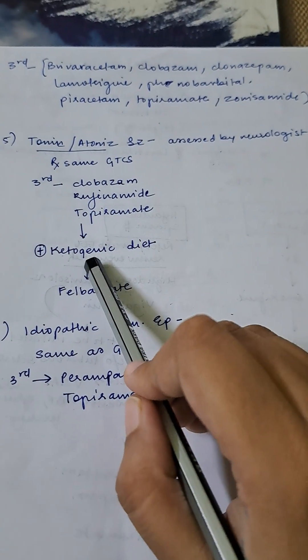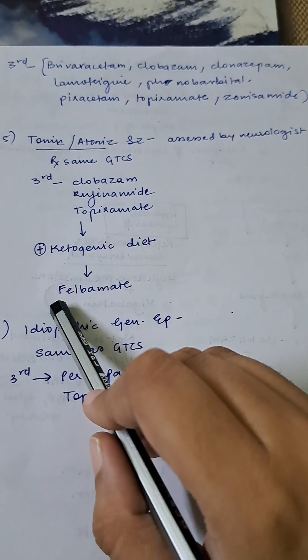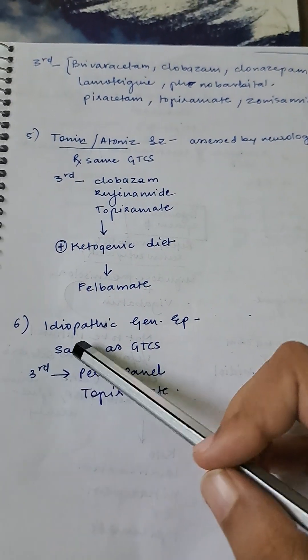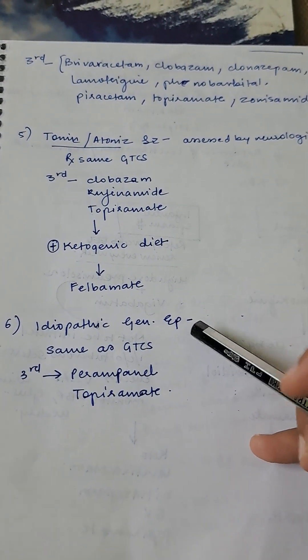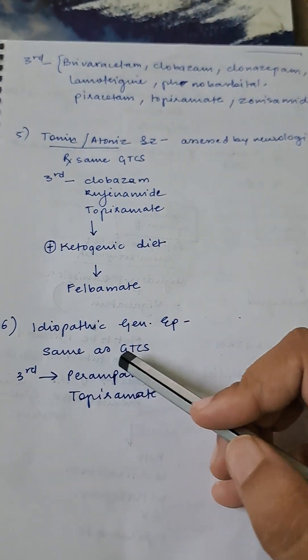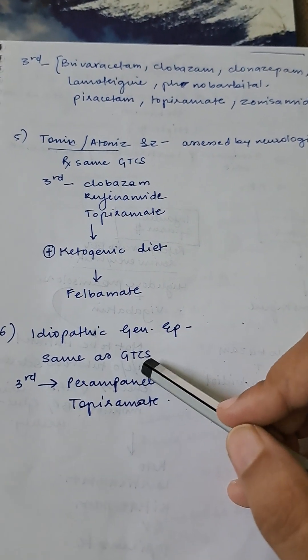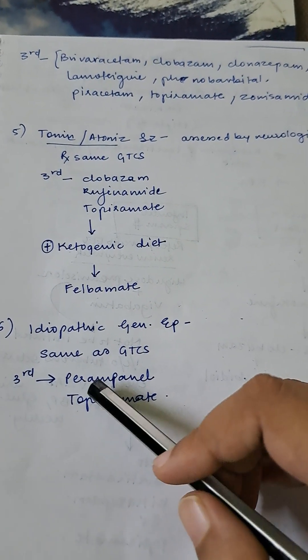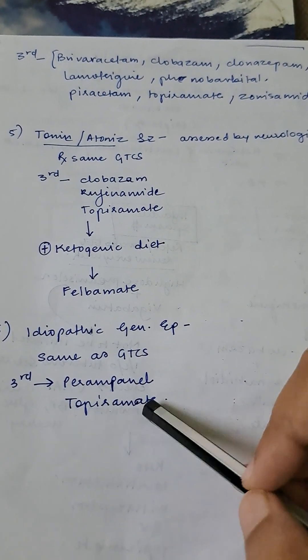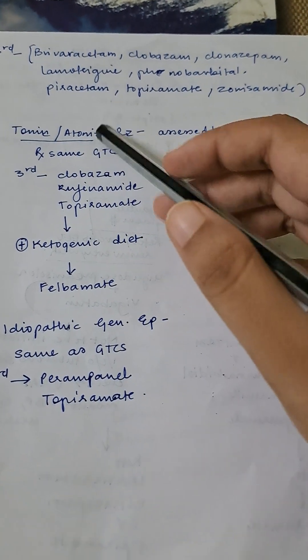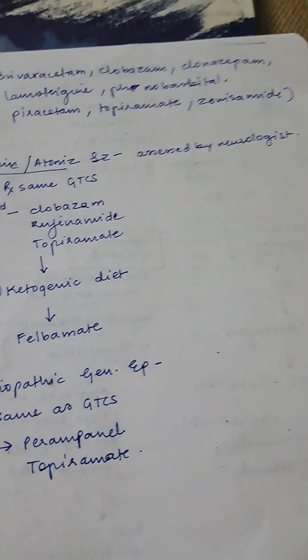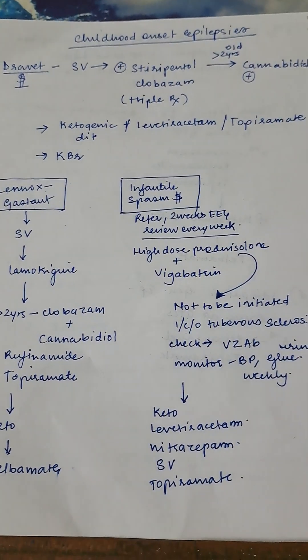Still, if this is not working, you will add felbamate. This line treatment is slightly different. Sixth, idiopathic generalized epilepsies: treatment is same as generalized tonic-clonic seizures except for the third line. Here you will add perampanel or topiramate. You can see topiramate is there in almost all the third-line drugs. Okay, very often asked is childhood onset epilepsies.